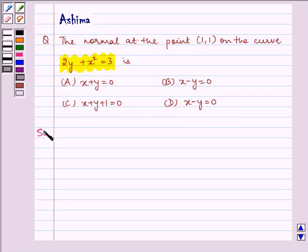Now let's proceed to the solution. Given curve is 2y plus x squared equals 3, or we can write as 2y equals 3 minus x squared.